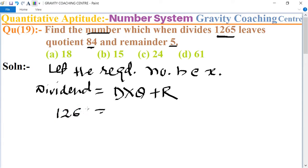1265 equals divisor x times quotient 84 plus remainder 5.